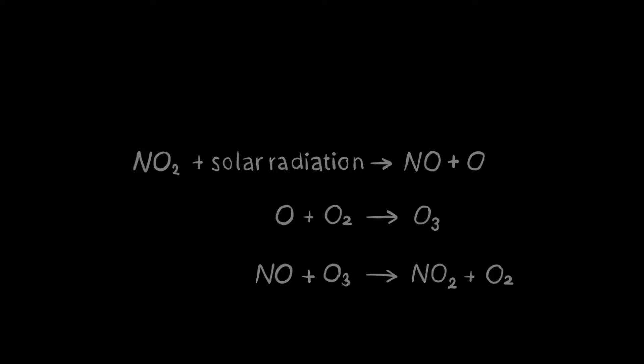So we have five state variables: the concentration of nitrogen dioxide, the concentration of nitric oxide, the concentration of atomic oxygen, the concentration of oxygen, and the concentration of ozone.